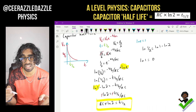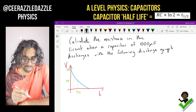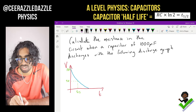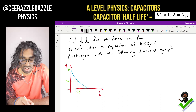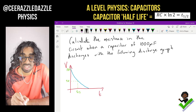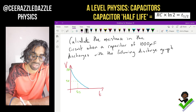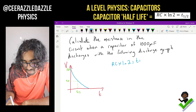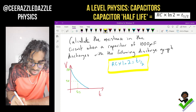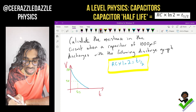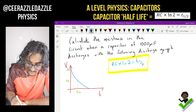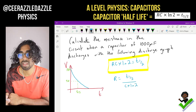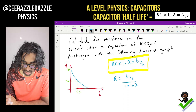Let's do a question to test our understanding. Calculate the resistance in the circuit when a capacitor of 1000 microfarads discharges with a given discharge graph. We know that RC times ln(2) equals t½, so we can rearrange to make R the subject: R equals t½ divided by C times ln(2).